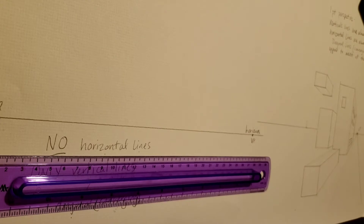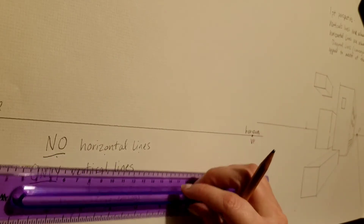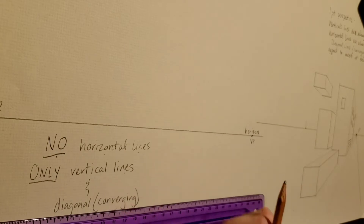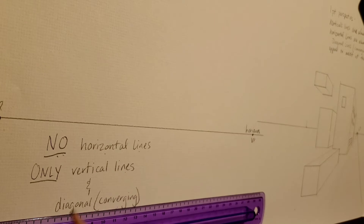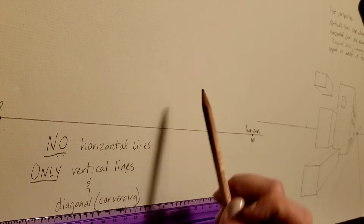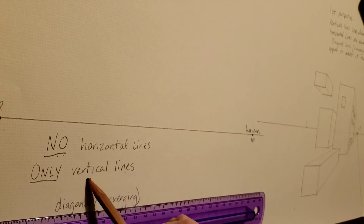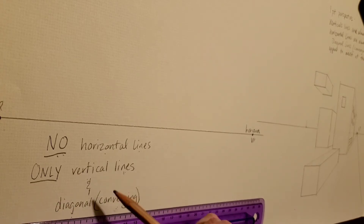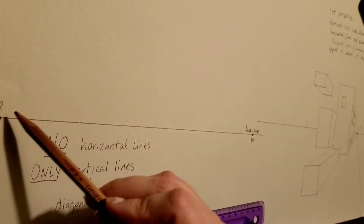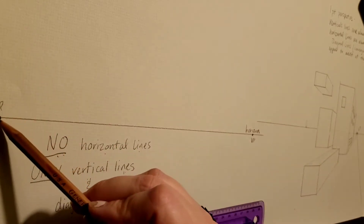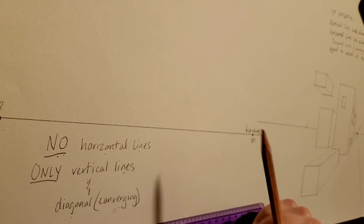Here is where two-point perspective is different from one-point perspective: in two-point perspective, there are no horizontal lines — none. You're not drawing any of them. If you draw a horizontal line parallel to the horizon, it is wrong. There are only vertical lines and diagonal lines. Those diagonal lines are the lines that converge to your vanishing points, always. All diagonal lines will appear to meet at either one or the other of your vanishing points.